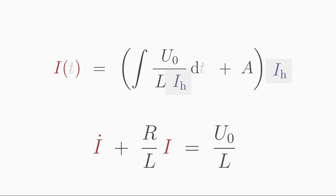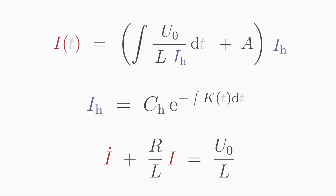First, we need to determine the homogeneous solution Ih. We can quickly calculate this using the solution formula for the homogeneous version of the differential equation that you learned before. The coefficient k in front of the searched function I corresponds to R over L and is also time independent in this case.